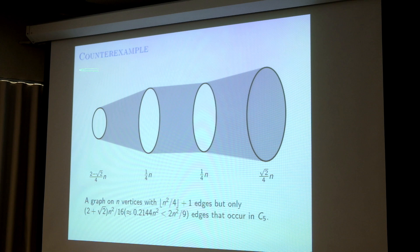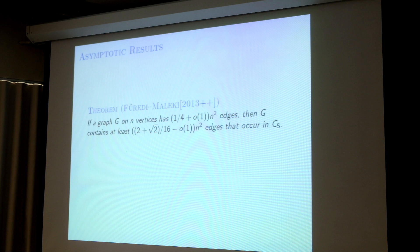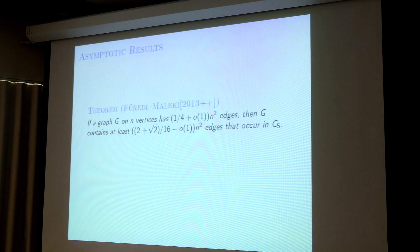Asymptotically, this number is best possible. Freddie and Malachi showed that instead of looking at graphs with a fixed number of edges n²/4 + 1, you look at edge density 1/4 + o(1). Then such a graph would contain at least roughly the number suggested by the counterexample edges that occur in C5 — specifically, 2 + √(16) over something, minus o(1).